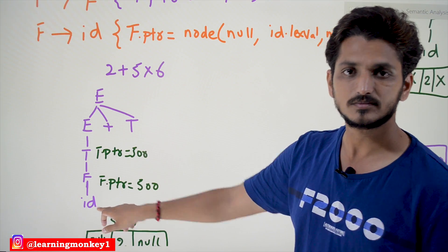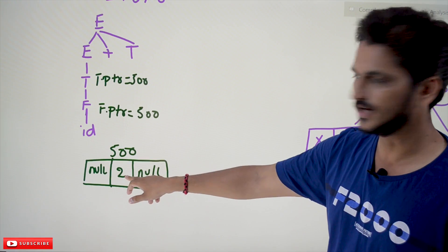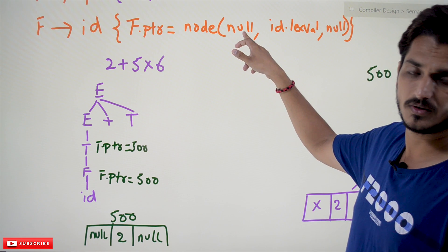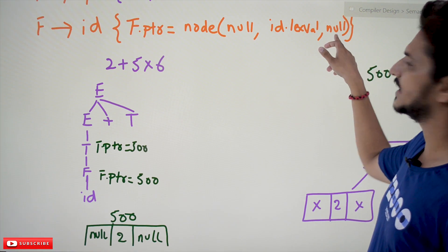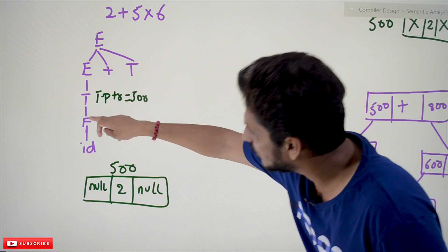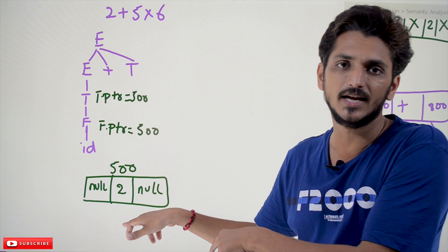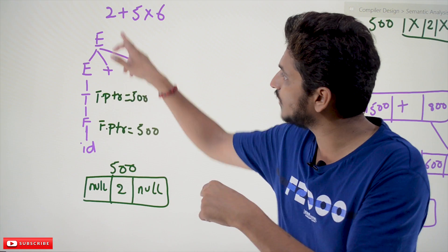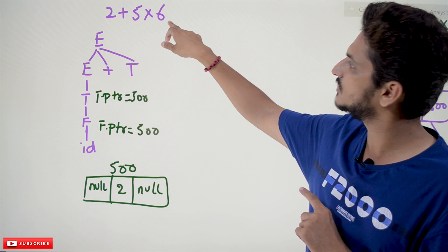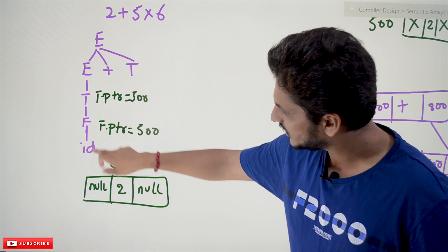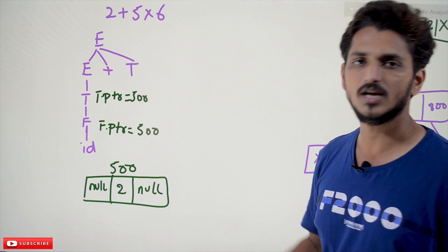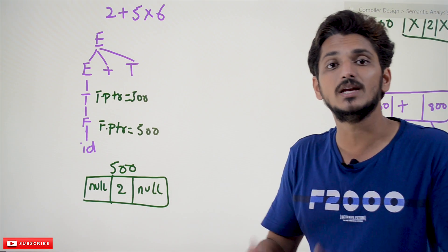We call a function node() which creates a node structure. In this node we place id.lex_value, which is 2, along with a null left child and a null right child. That is how we create a node. Whenever we encounter F → id, a new node is created, placing the lex value at that position. When processing 5, the lex value is 5; when processing 6, the lex value is 6. At this point the value is 2, left child is null, right child is null. Assume this node is assigned memory location 500.